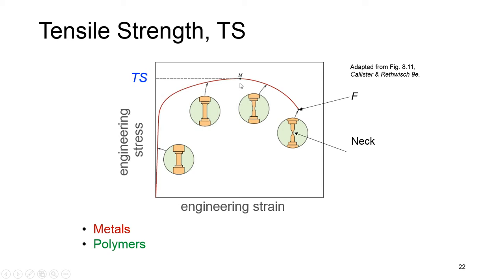The maximum stress on the engineering stress-strain curve — what is the difference between engineering and true stress-strain curve? In the engineering stress-strain curve, the maximum point, shown here with M, is called tensile strength. After tensile strength, we see the cross section becoming narrower rapidly; this part is called necking. At the end we have fracture, which is the fracture point or ultimate strength.